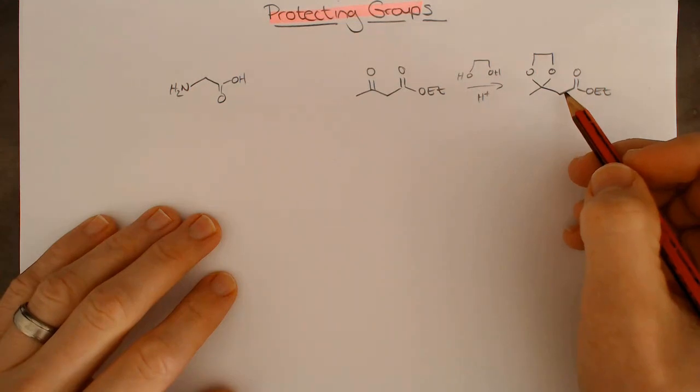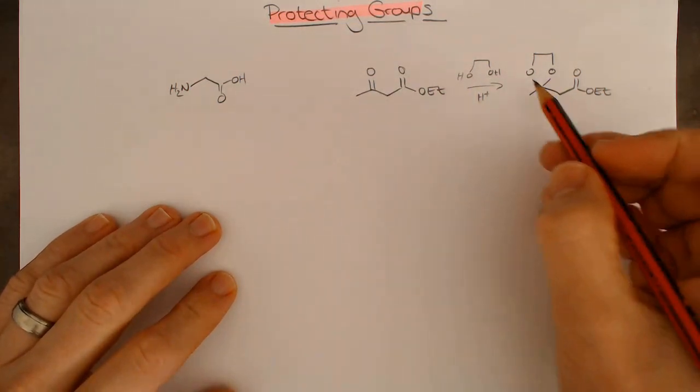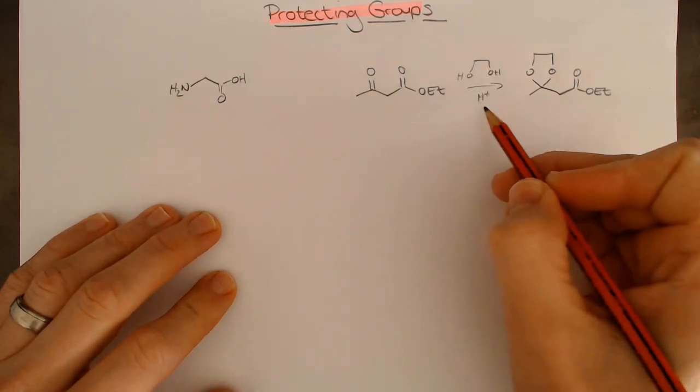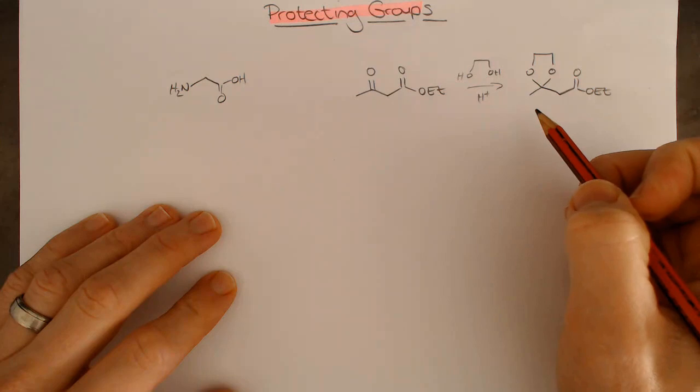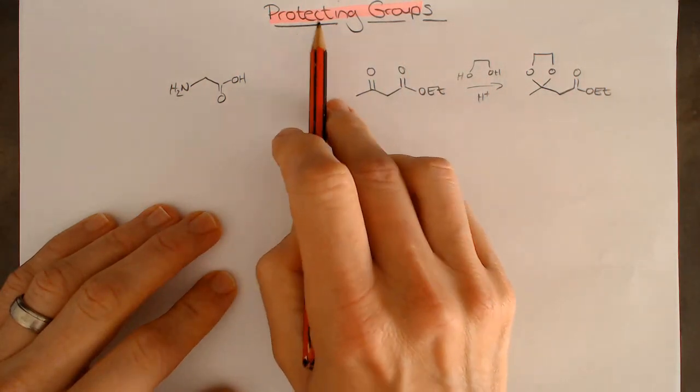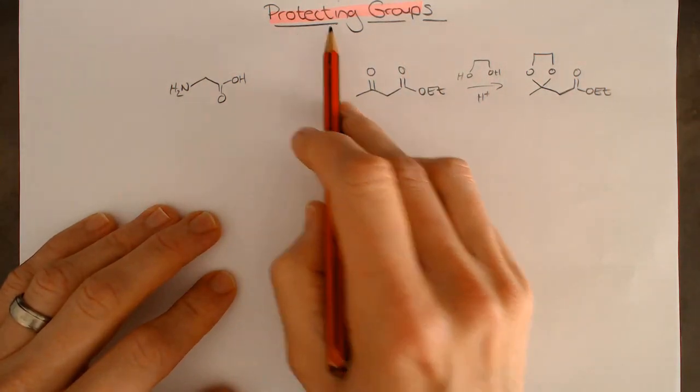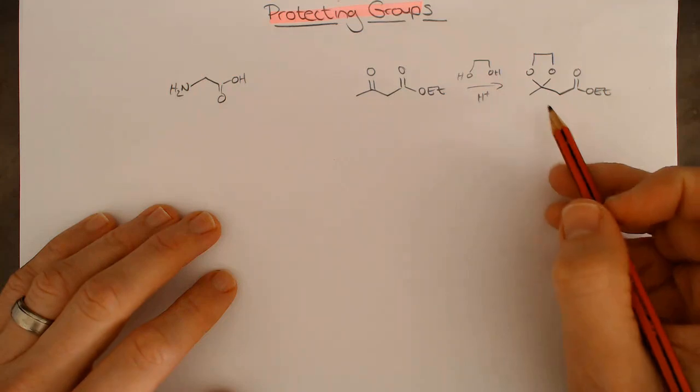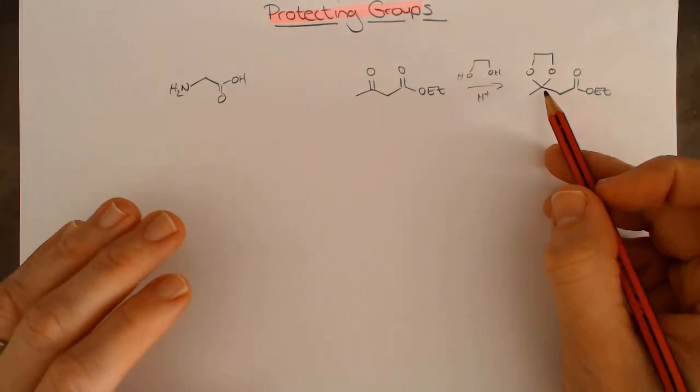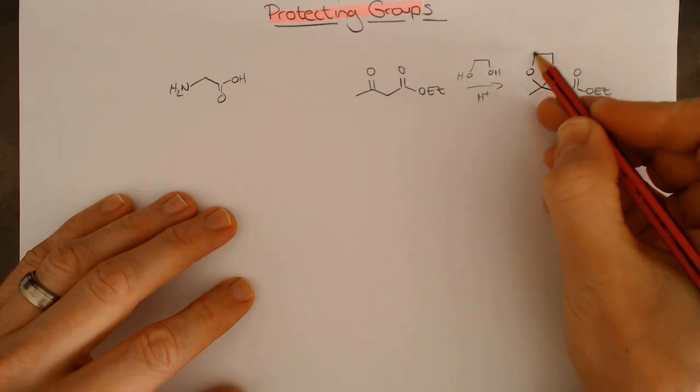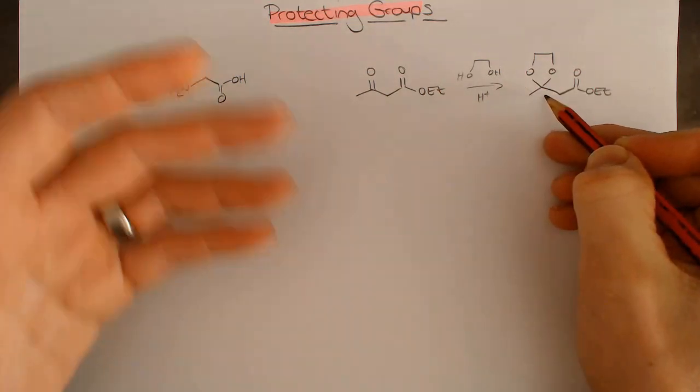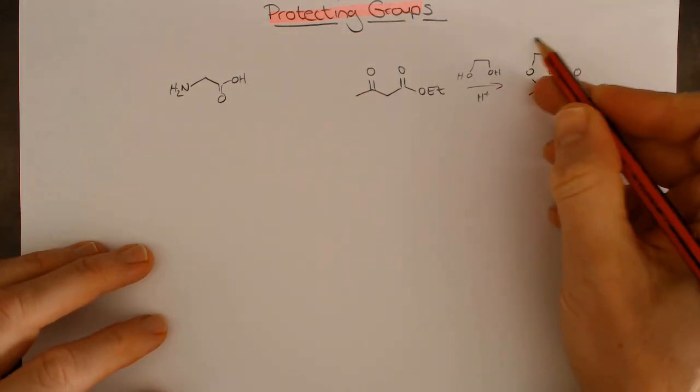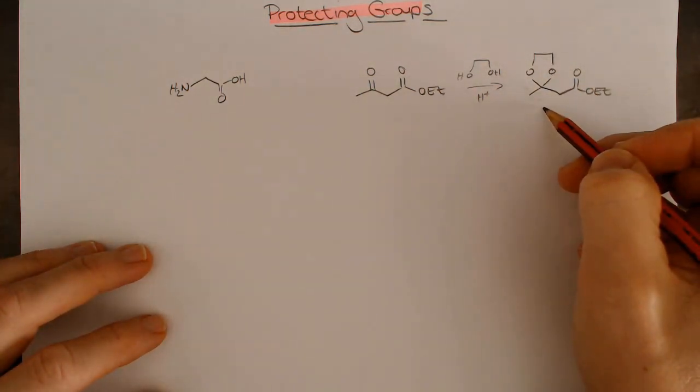The nice thing with these is that we can easily deprotect these just by doing the reverse reaction, adding water under acidic conditions. That's one of the most important things about protecting groups - they need to be something we can introduce easily, and we must be able to remove them easily as well. At the same time, the protecting group must have a level of non-functionality.